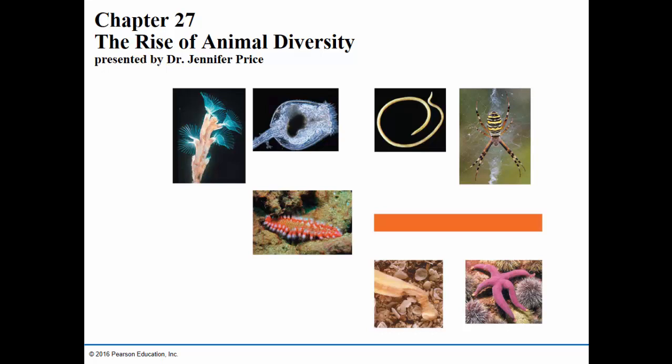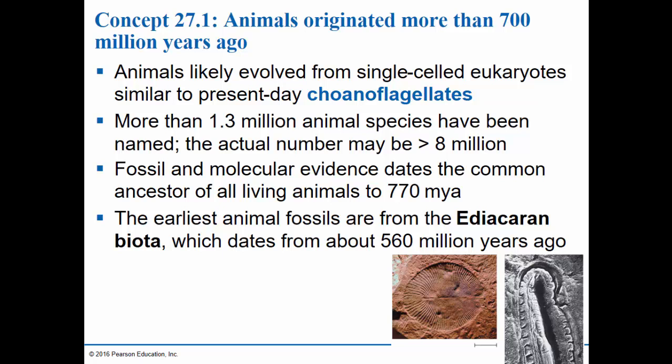Now we move on to learning about how the animal kingdom diversified from earlier eukaryotes. We think that animals are a monophyletic group that evolved from single-celled eukaryotes, which were very similar in structure, size, and shape to the present-day protist group known as the choanoflagellates.